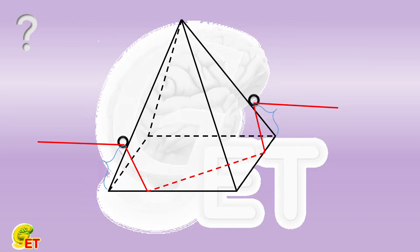This can be done in two ways. One is to pass through two adjacent edges of the base. The other one is to pass through the two opposite sides of the base.